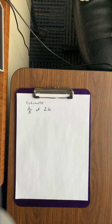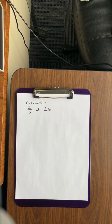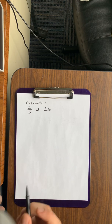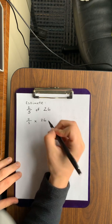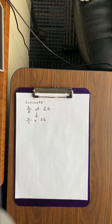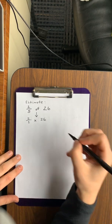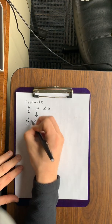All right guys, estimating fractions, this one specifically by a whole number: two-fifths of 26. We can also write that as two-fifths times 26. 'Of' just means to multiply. Our first step was to skip count by our denominator.